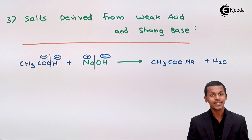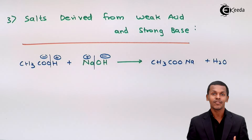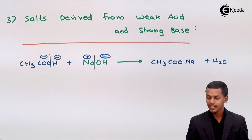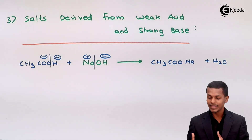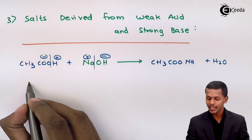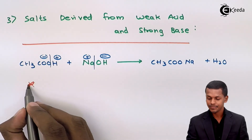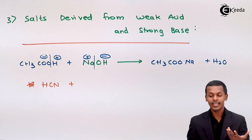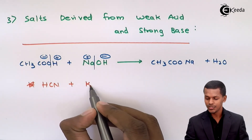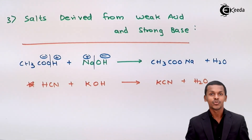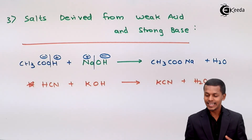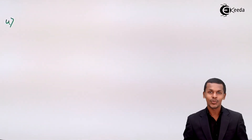The product we get is CH₃COONa along with H₂O. This is known as sodium acetate, and it is very soluble in water because most salts are easily soluble in water. Another example: if we take HCN and react it with strong base KOH, we get the salt KCN along with H₂O. This is also a salt derived from a weak acid and a strong base.